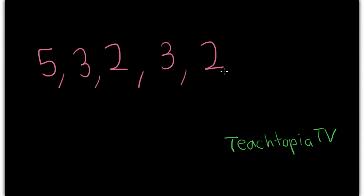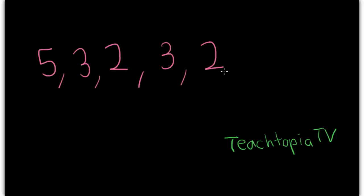Now, the first thing you need to do when you're given a set of numbers, and you have to find either the mean, median, mode, or range, is you have to put them in order. And that is in sequence from least to greatest.